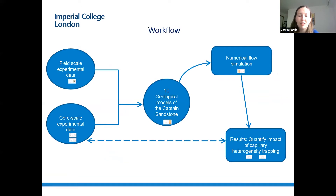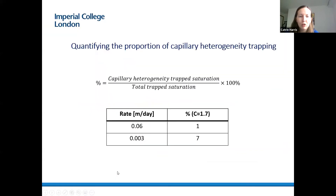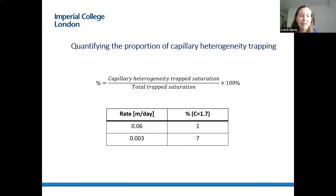We can then use the results of these simulations to quantify the impact of capillary heterogeneities on trapping. Using the equation to quantify the proportion of trapping resulting from capillary heterogeneities, the initial results show that the proportion of capillary heterogeneity trapping is a function of rate. For the rates used, capillary heterogeneity trapping accounts for 1% and 7% of total trapping respectively at these rates.